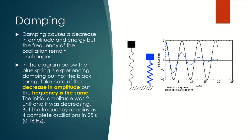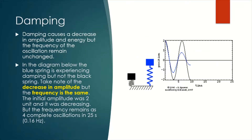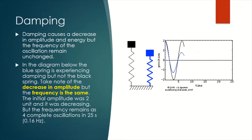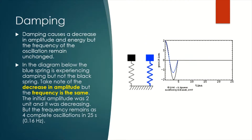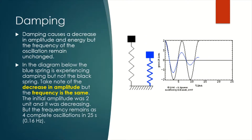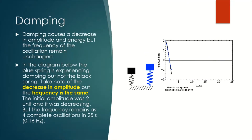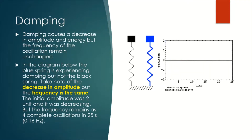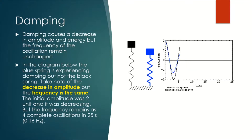So does the frequency decrease or increase? No. The frequency remains the same. So this tells us that in damping, amplitude decreases, but the frequency remains unchanged.